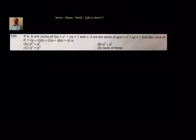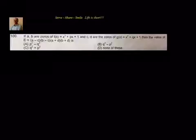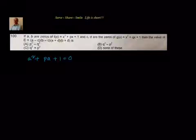We have been given two polynomials and the zeros of them. The first thing that comes to mind is: what is the relation between zeros and coefficients of a quadratic polynomial? We know that if a, b are zeros, then a and b both satisfy the polynomial. So a² + pa + 1 = 0, and also b² + pb + 1 = 0.